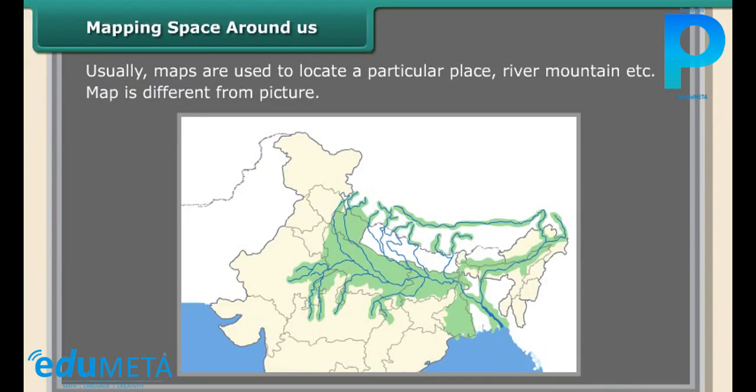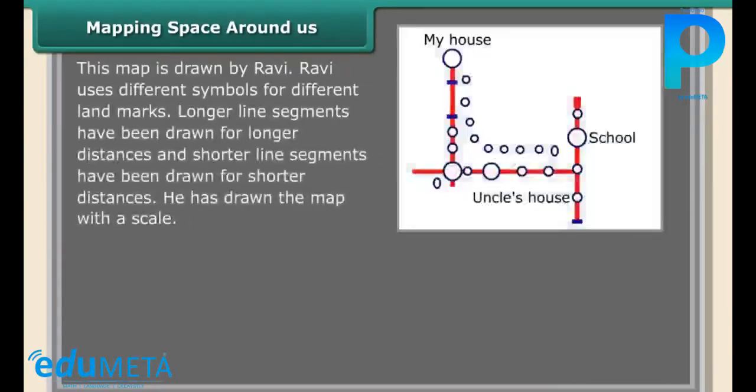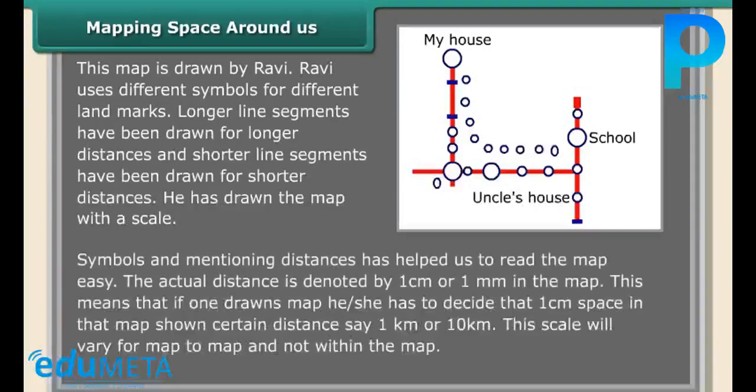This map is drawn by Ravi. Ravi uses different symbols for different landmarks. Longer line segments have been drawn for longer distances and shorter line segments have been drawn for shorter distances. He has drawn the map with a scale.